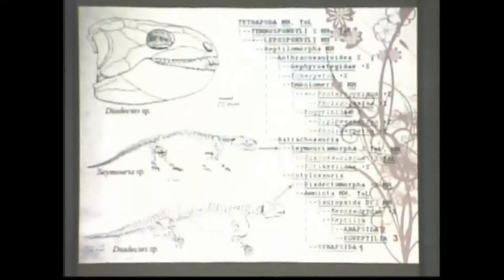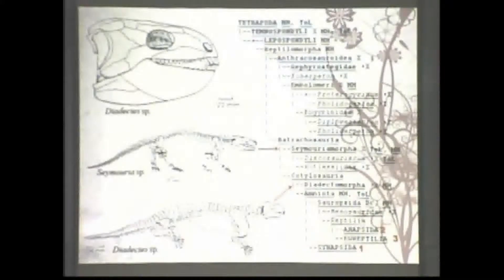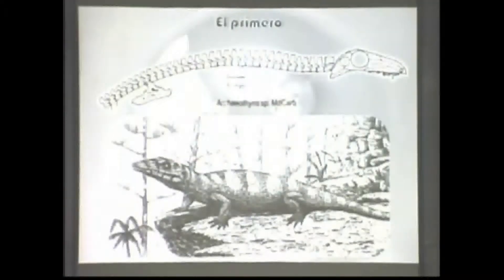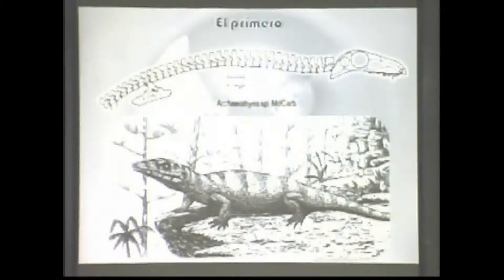Este grupo se originó de anfibios similares a los dos que aparecen en la imagen, cuyos esqueletos se fueron transformando poco a poco para adaptarse a la vida en el medio terrestre. El primer grupo en divergir fue el de los sinápsidos, o reptiles parecidos a los mamíferos, que divergieron desde el Carbonífero. Las primeras formas eran de hábitos acuáticos, con grandes cabezas y grandes dientes caniniformes que servían para matar presas. El primero de ellos ya tenía dientes caniniformes pero era muy similar a los grupos más basales.